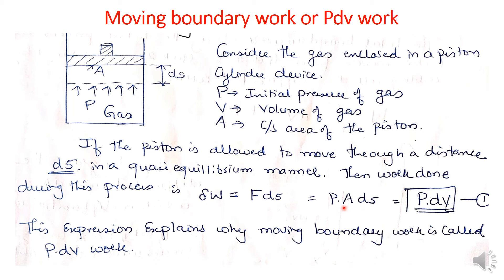Since cross-sectional area A multiplied by the displacement ds equals the change in volume dV, we can replace A·ds with dV. Therefore, δW = P·dV. This expression explains why moving boundary work is called PdV work. The total boundary work as the piston moves from state 1 to state 2 is obtained by adding all differential works: W = ∫₁² P dV.